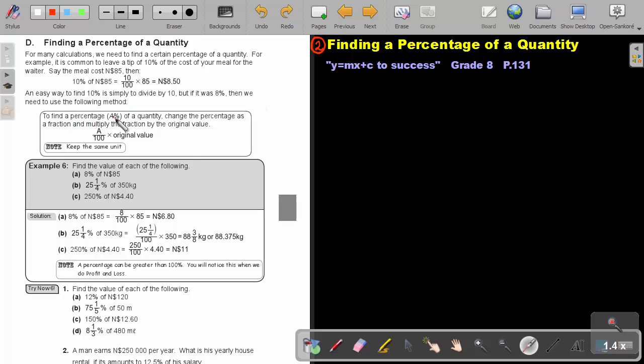But if it was 8%, then we need to use the following method. To find a percentage, a percent of a quantity, change the percentage as a fraction. So by putting it over 100 and multiply the fraction by the original value. So just multiply it with that value. It can either be money or kilogram or seconds, any unit. So keep the unit the same. So if this was in Namibian dollar, the answer will be in Namibian dollar.